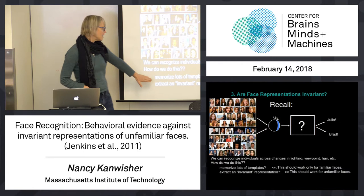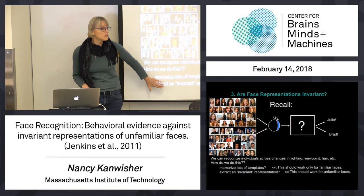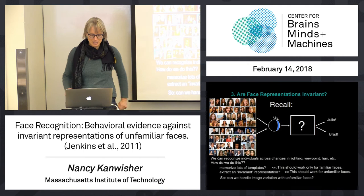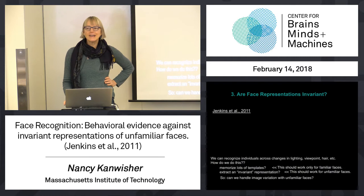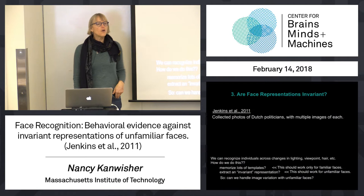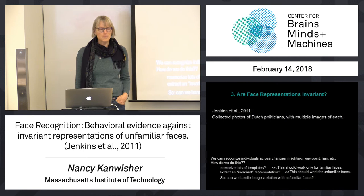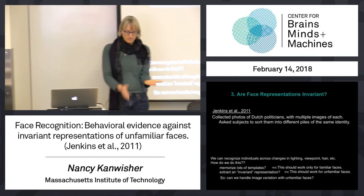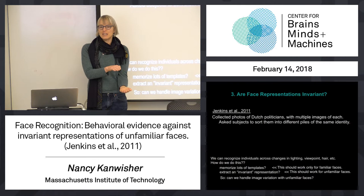This idea predicts that it ought to work at least pretty well for people you don't know — you should be able to match two different images of a person you haven't met. Let's try it. So, a guy named Jenkins did a wonderful, simple, low-tech experiment. He collected a whole bunch of photographs of Dutch politicians, because he's doing this experiment in Australia, where they didn't know those particular Dutch politicians, but he got loads of pictures of those people in all kinds of different situations off the web. So we had lots of different pictures of each of lots of different people.